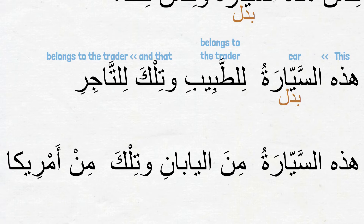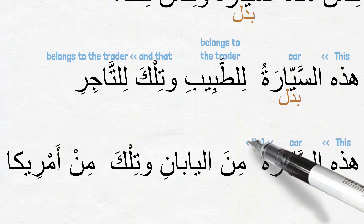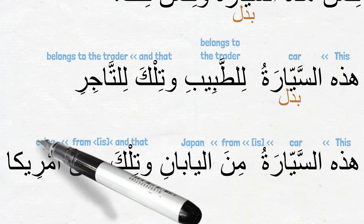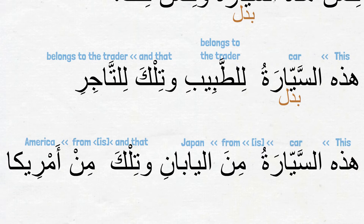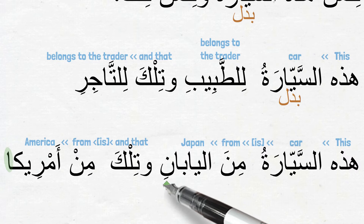And the last sentence: هذه السيارة من اليابان وتلك من أمريكا — This car is from Japan and that is from America. Recall from the last video that the ism أمريكا ends with أليف, and that أليف constrains it from taking كسرة ending even when coming as مجرور after حرف جر. That is why الياباني is ending normally with كسرة in the مجرور case after حرف الجر, but أمريكا remains as أمريكا even after the same حرف.